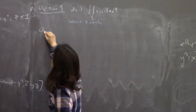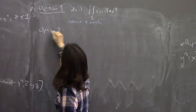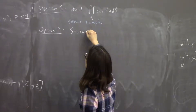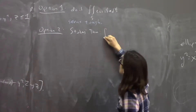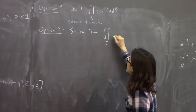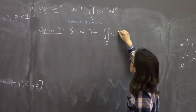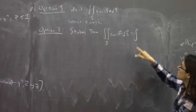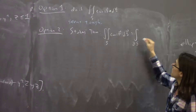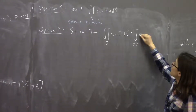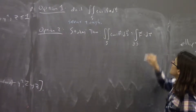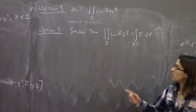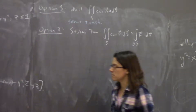Option two is to use Stokes' theorem. Stokes' theorem says this thing you want — the integral over S of curl F · dS — is just equal to the integral over the boundary curve of F · ds, as long as you orient things properly. So let's first figure out what our orientations should be on this boundary curve.